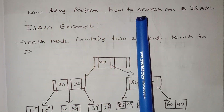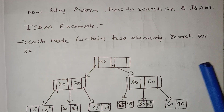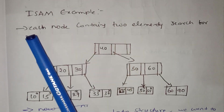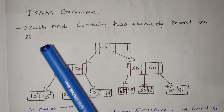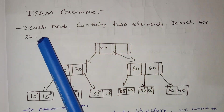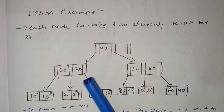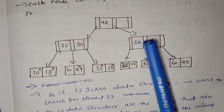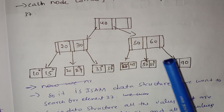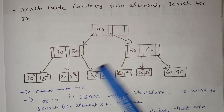Let's look at how to search in ISAM. For example, each node contains two elements. We want to search for the value 37. We have two elements in each node.